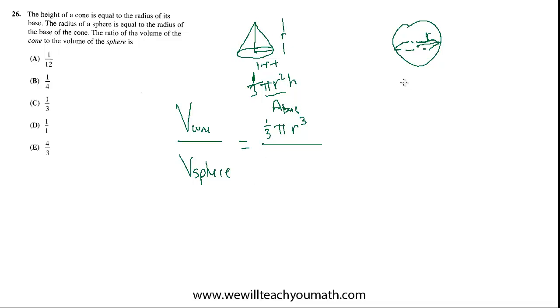The volume of a sphere is given by four-thirds pi r cubed. That's always true for a sphere. Four-thirds pi r cubed.